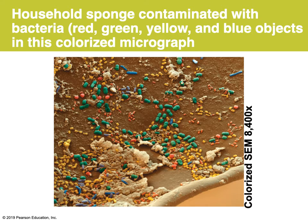Household sponges should be cleaned, put in a microwave, or replaced routinely. Silicone is a nice replacement for standard cellulose sponges because you can boil a silicone scrubber. Because if you don't, all those colorized red, green, yellow, and blue dots you see in the image are all bacteria — they can potentially contaminate your food supply if you use a relatively dirty sponge.